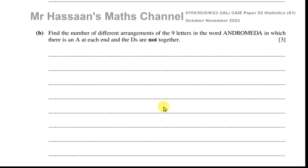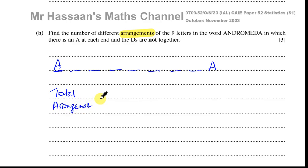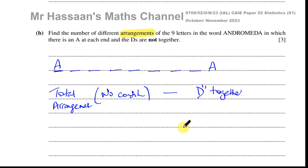For part B, find the number of different arrangements of the 9 letters of Andromeda in which there is an A at each end and the Ds are not together. So we fix an A at position 1 and position 9, leaving 7 middle spaces. When you want the Ds to be not together, the easiest approach is: total arrangements with no condition, minus the arrangements where the Ds are together.